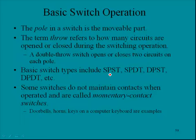Basic switch types include single pole single throw, single pole double throw, double pole single throw, double pole double throw, etc. Some switches do not maintain contact when operated and are called momentary contact switches. And these include doorbells, horns, keys on a computer keyboard are examples.